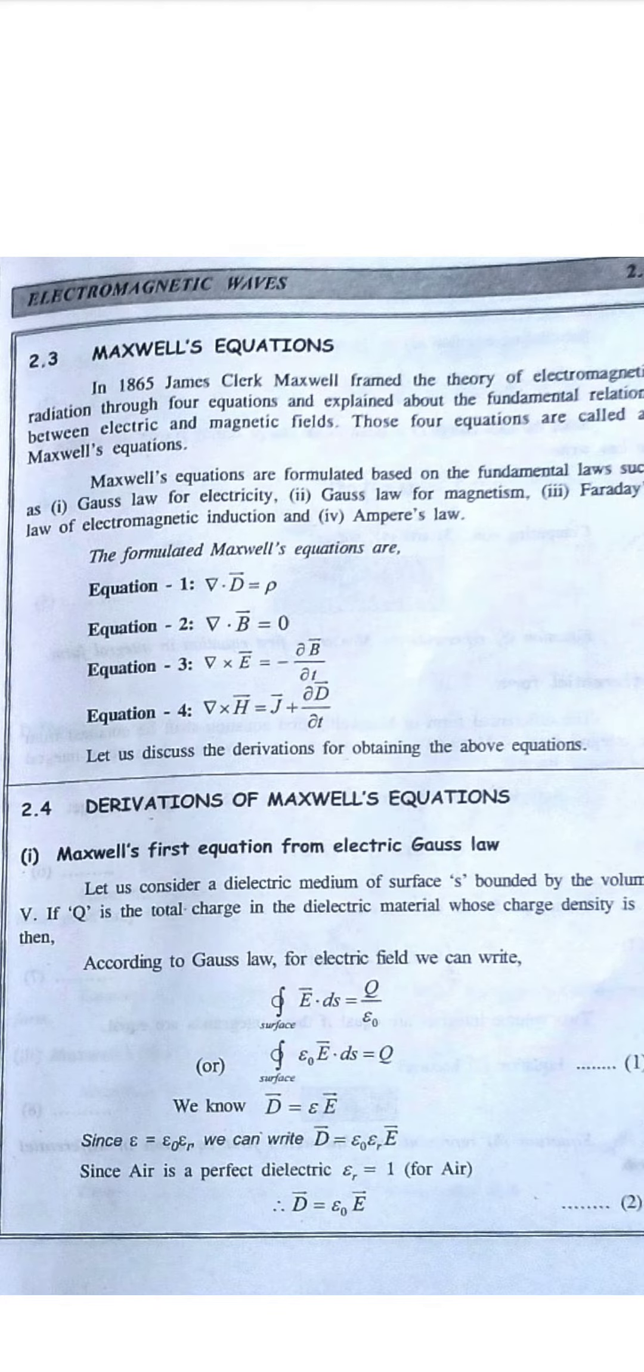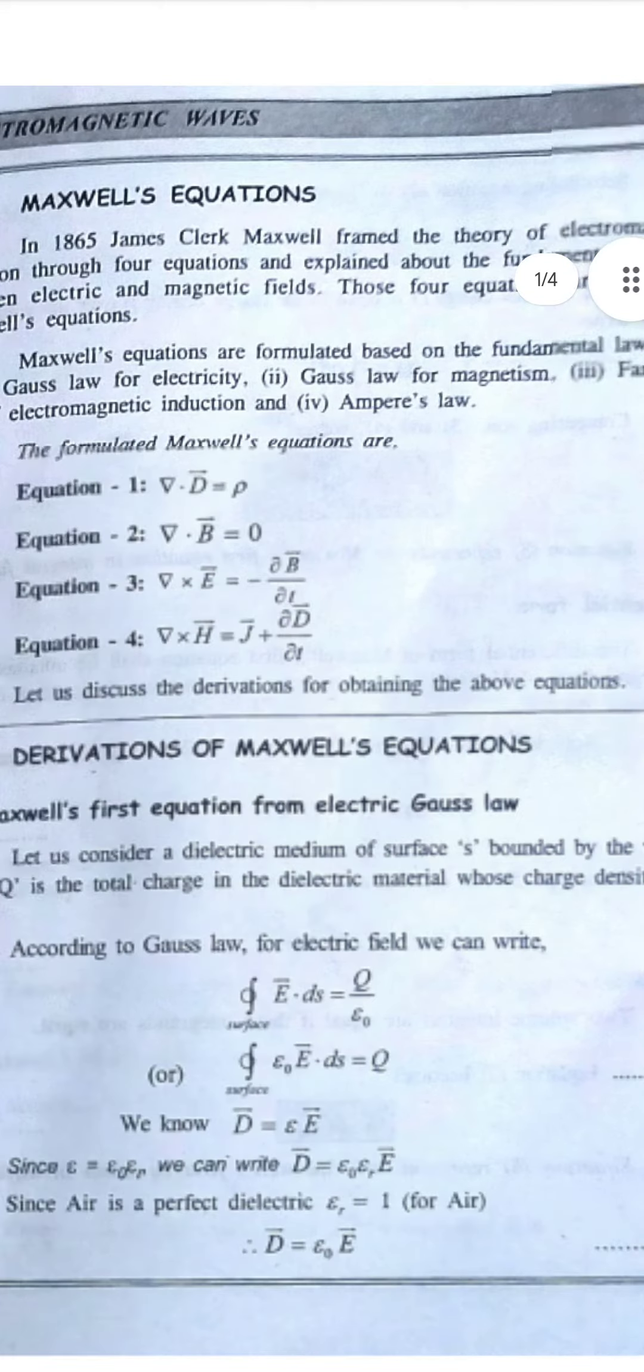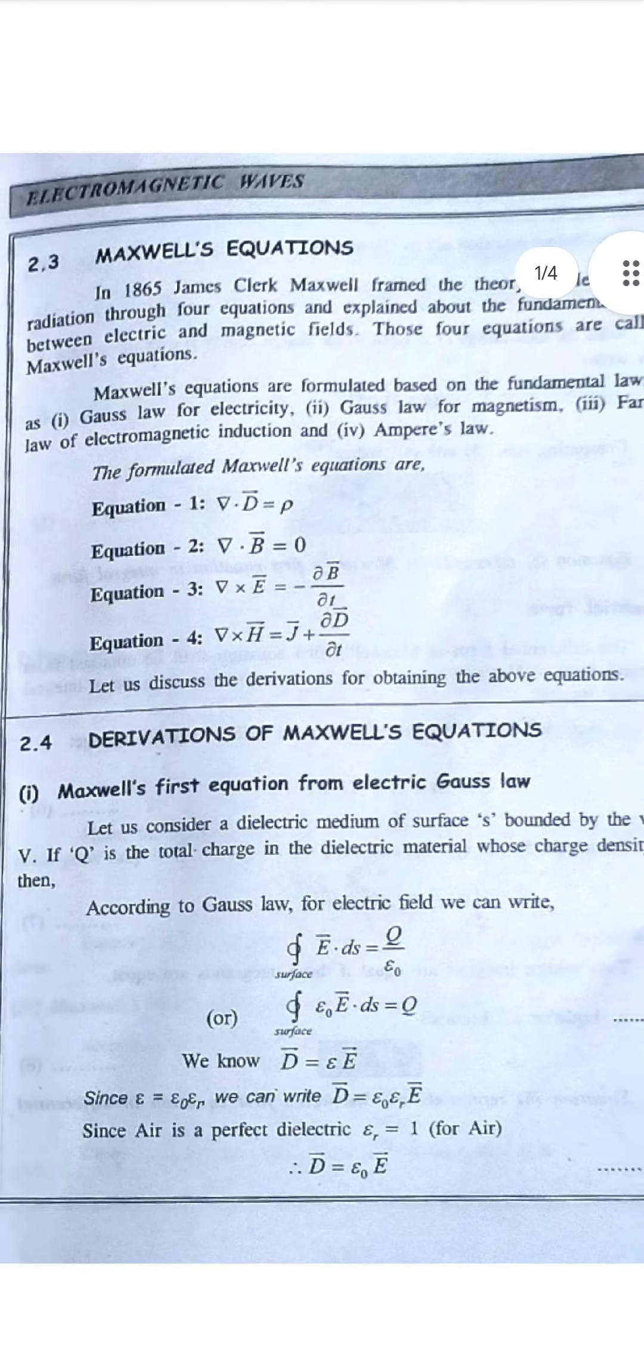Equation two: del dot B vector is equal to zero. Equation three: del cross E vector equals minus dB/dt. And equation four: del cross H vector equals J vector plus dD vector by dt.